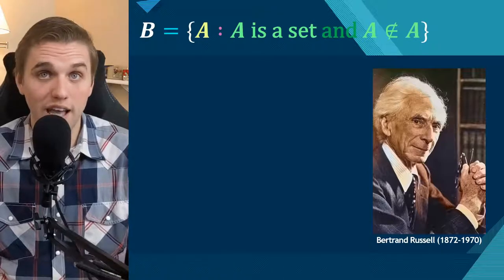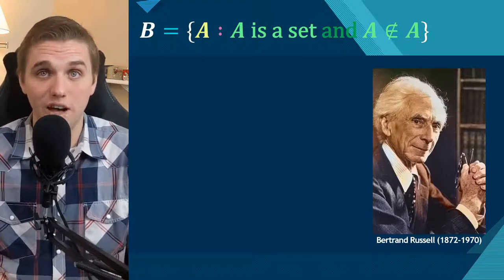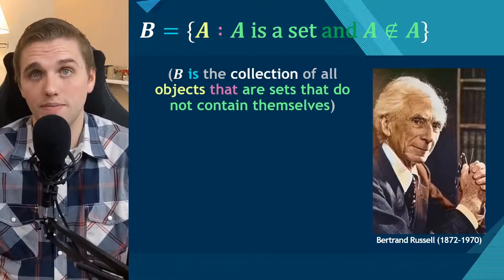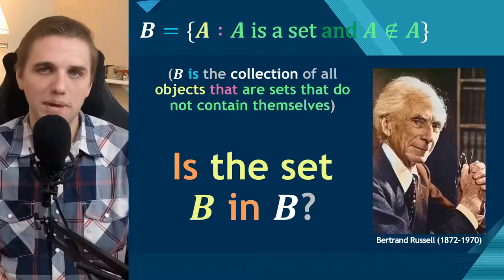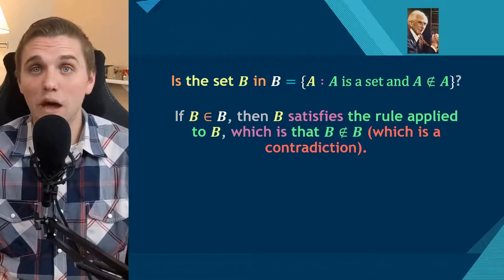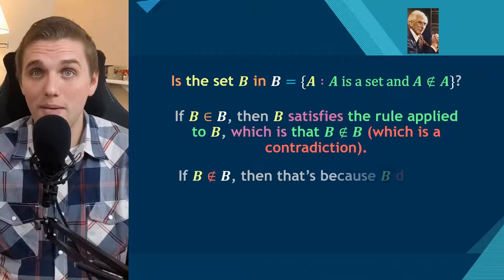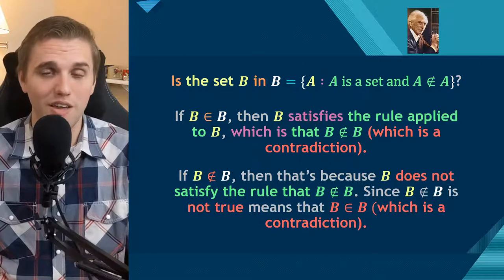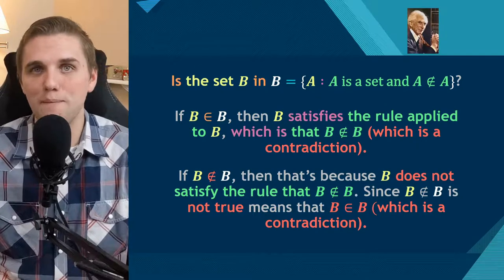Consider this set B, which is defined as a collection of objects such that A is a set and A is not a member of itself. So B is the collection of all objects that are sets and do not contain themselves. To see the contradiction, we ask: is the set B in B? If B is in B, then B satisfies the rule of B, and that rule is that B is not an element of itself — which is a direct contradiction. Similarly, if B is not a member of B, then B does not satisfy the rule that B is not a member of itself, which — taking that double negative — means that B is a member of itself.